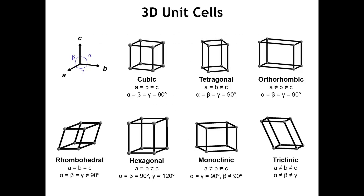In three dimensions, the unit cell is not a parallelogram anymore, but it is an object called a parallelepiped. The parallelepiped has six faces, and the opposite faces are parallel to each other, and each face is itself a parallelogram.